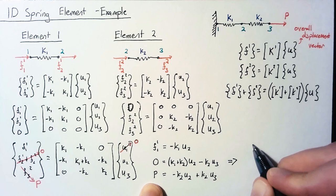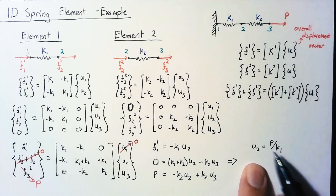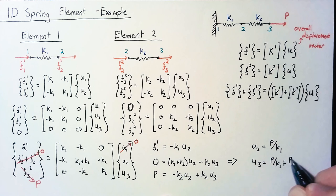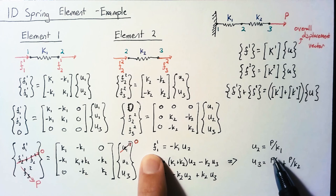What that means is that U2 equals P divided by K1. With that in hand, we can plug that into either of these equations, and we'll end up with U3 equals P over K1 plus P over K2. And then we can also use this U2 value to calculate the force of the wall acting on the springs.